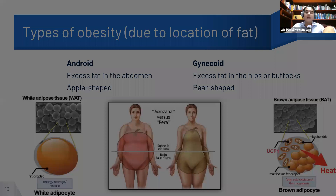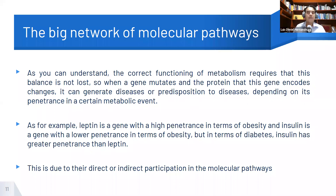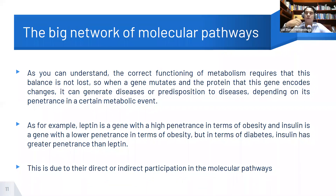The correct functioning of metabolism requires that this balance is not lost. When a gene mutates and the protein it encodes changes, it can generate diseases or a predisposition to diseases, depending on its penetrance in a certain metabolic event. For example, leptin is a gene with high penetrance in terms of obesity, while insulin has lower penetrance in terms of obesity.